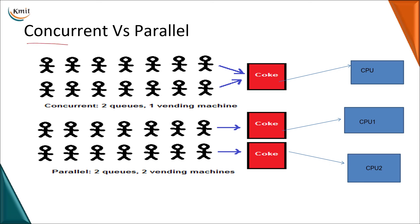Now a term you will frequently use is 'concurrent.' What do you mean by concurrent execution? Take a real-time example: a vending machine for a queue. If I have two vending machines and two different queues, one queue is serviced by one machine and the other by the other — that we call parallel. In concurrent execution, I have only one vending machine but two different queues — the service is done alternatively, one person from one queue then the other. Both are not being serviced simultaneously; there is a time gap.